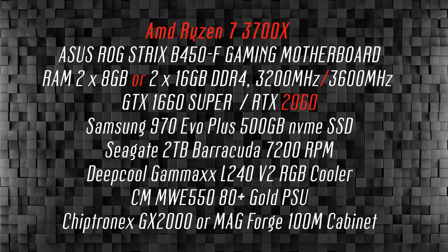The 3700X works best with 3200 MHz or 3600 MHz RAM, as this is a 3rd generation Ryzen. Hardware acceleration in Premiere Pro and After Effects is a little better with a good argument. For that, a minimum GTX 1660 Ti is recommended as a graphics card. The price of the 3700X is approximately 28,000 Rs.